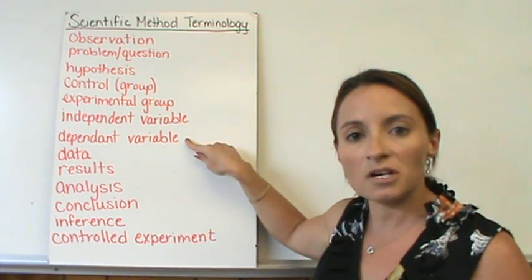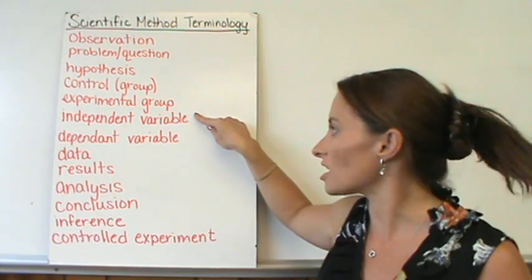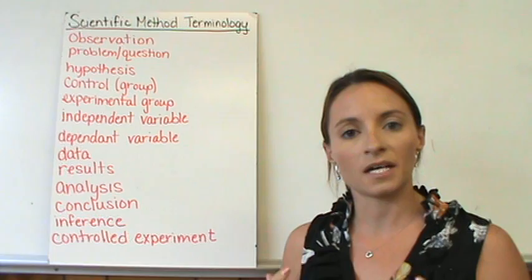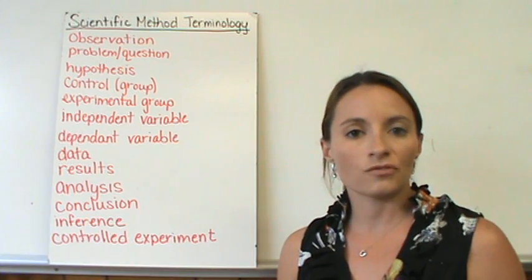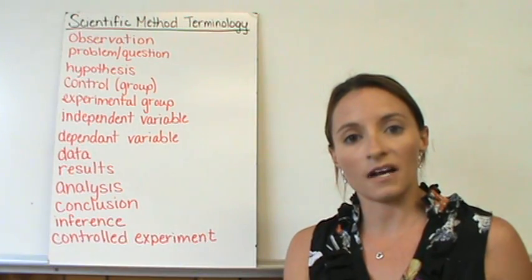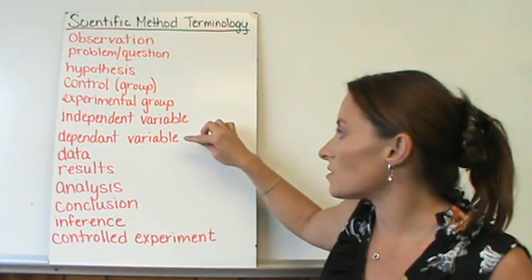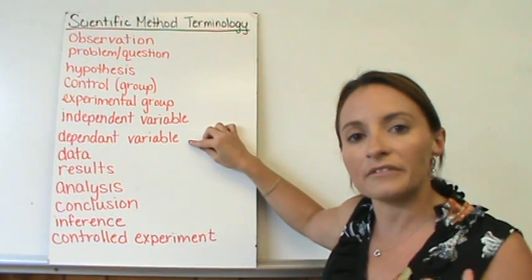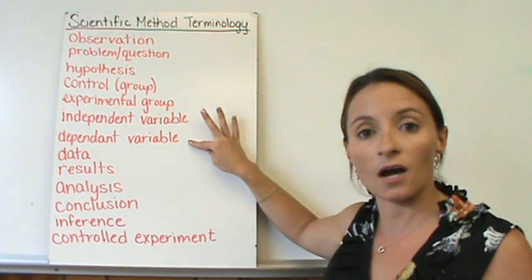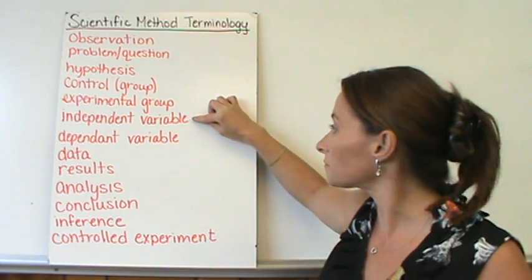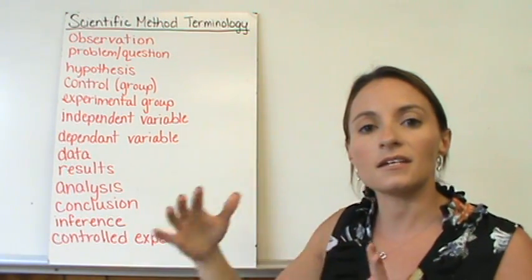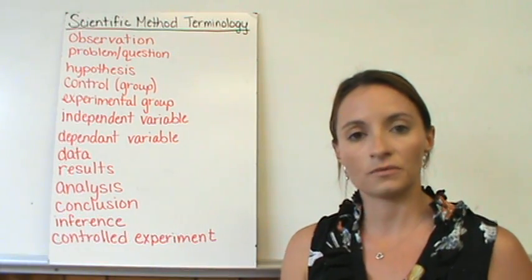Now, the dependent variable is what changes because I changed the independent variable, and is also what I am measuring at the very end of my experiment. So, what I'm measuring at the end of this experiment is the number of fish that survive or die. So, the dependent variable would be the number of fish that survive or the number of fish that die, depending on how I word my hypothesis. And my independent variable, what I changed, is the chemicals or pollutants in the water.